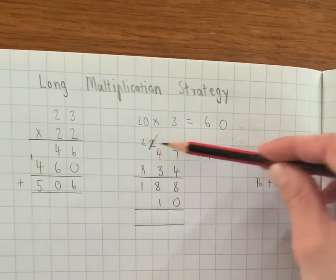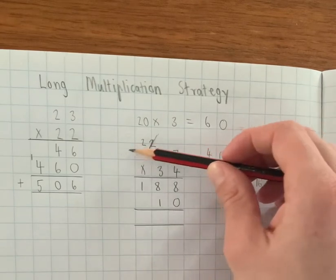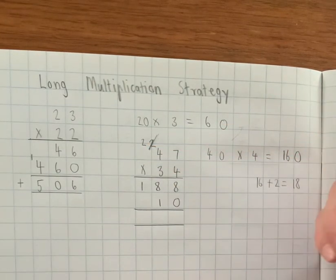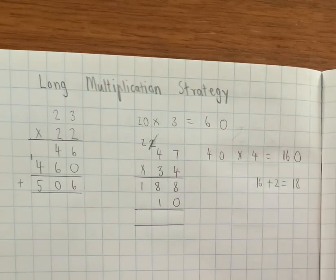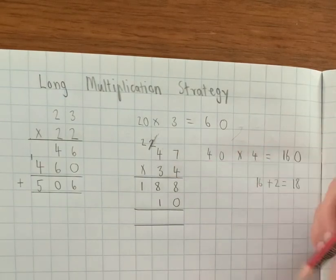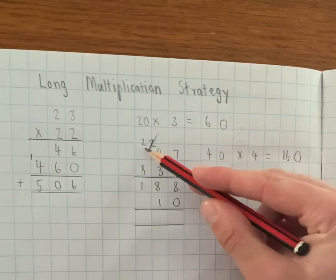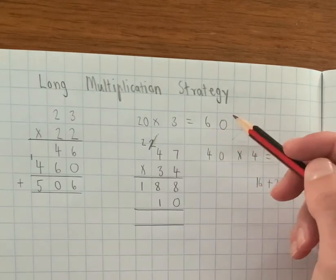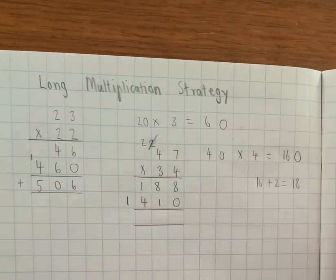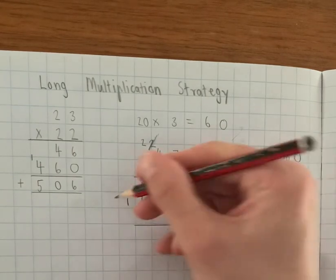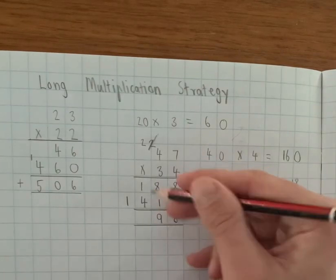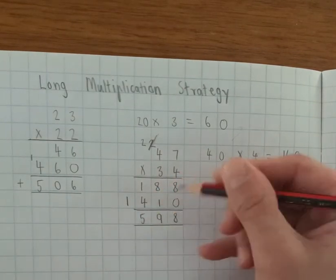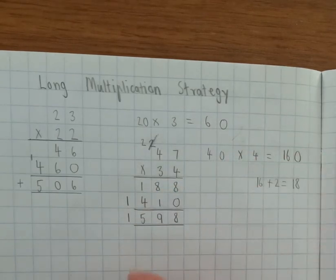Especially when you're doing larger numbers, you're multiplying maybe a 4 or 5-digit number by a 2-digit number, it's really important to make sure that you do cross out this number that you carried. So now we're doing 30 times 4 which is 120. Add the 2 extra tens on, gives us 14. Okay, now we do a bit of adding. 8 and 0 is 8, 8 and 1 is 9, 1 and 5 is 5, and then just the 1 on the end. So the answer is 1,598.